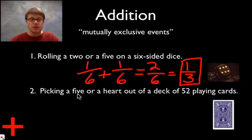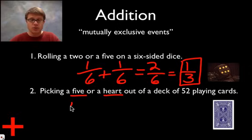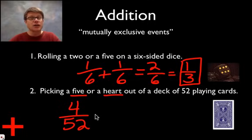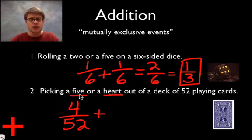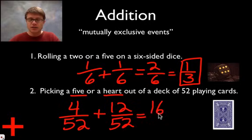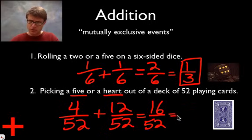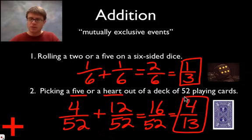What are the odds of picking a 5 or a heart out of a deck of playing cards? There are four 5s in the deck, so that's 4 out of 52. What are the odds of picking a heart? There are 13 hearts in the deck, but we've already counted the 5 of hearts, so that's 12 out of 52. Adding those together gives 16 out of 52, which reduces to 4 out of 13 — the probability that a card picked from the deck will be either a 5 or a heart.